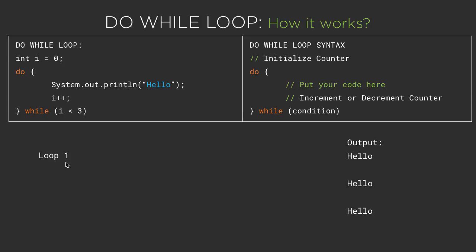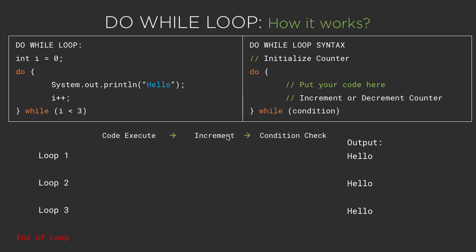Here we have loop 1, loop 2, and loop 3, and finally end of the loop. So what happens exactly when we iterate through the do-while loop 3 times? We first execute the code, then increment the counter, and then check the condition at the end.